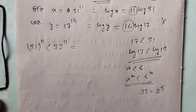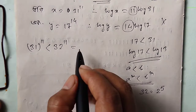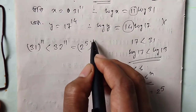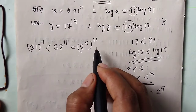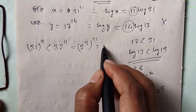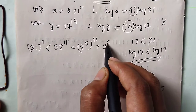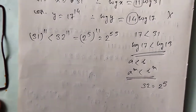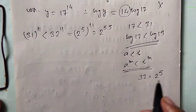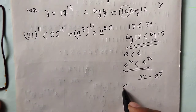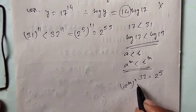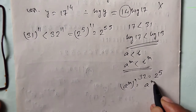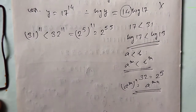Notice that 32 equals 2 to the power 5. So 2 to the power 5, whole to the power 11, equals 2 to the power 55. Using the formula: a to the power m, whole to the power n, equals a to the power m into n.